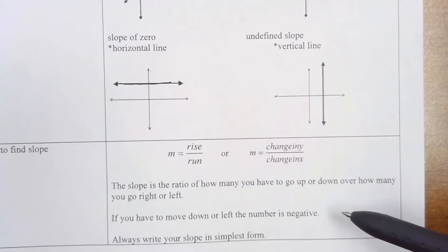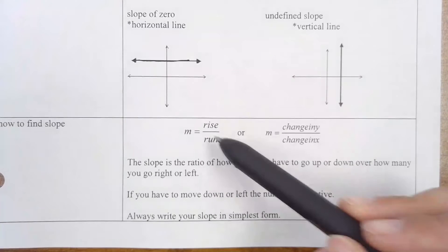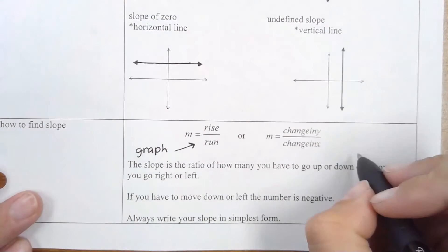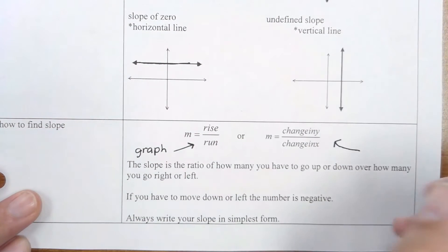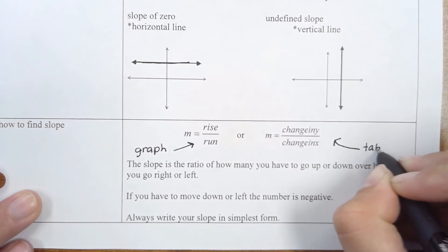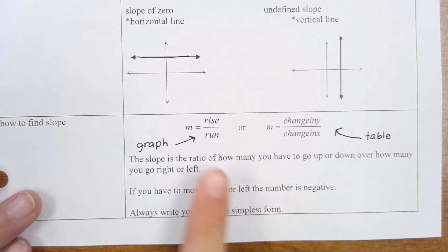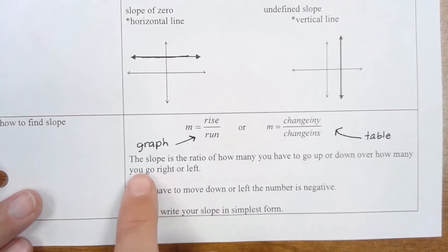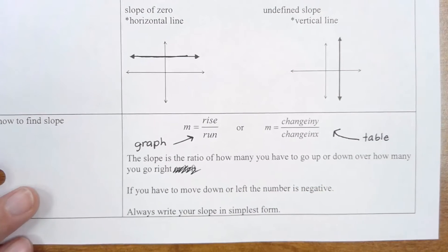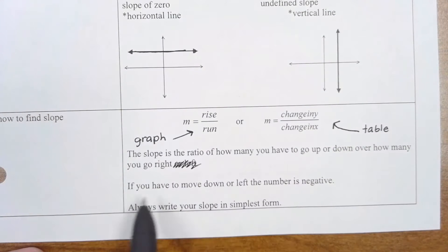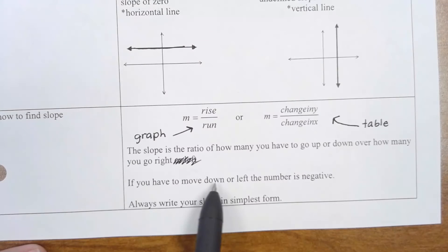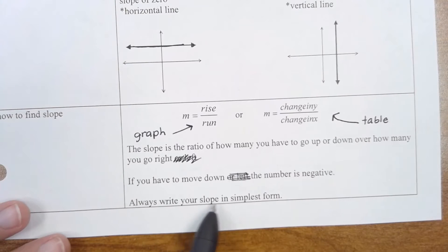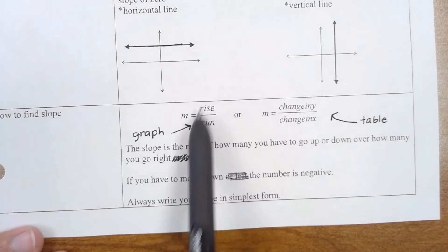To find slope, you use the rise over run formula when finding slope from a graph, and you use the change in Y over the change in X formula when finding slope from a table. Slope is a ratio of how far you go up or down over how far you go right. If you have to move down, your number is negative. Always write your slope in simplest form as a fraction — keep it as an improper fraction, not a mixed number, just make sure it is fully simplified.